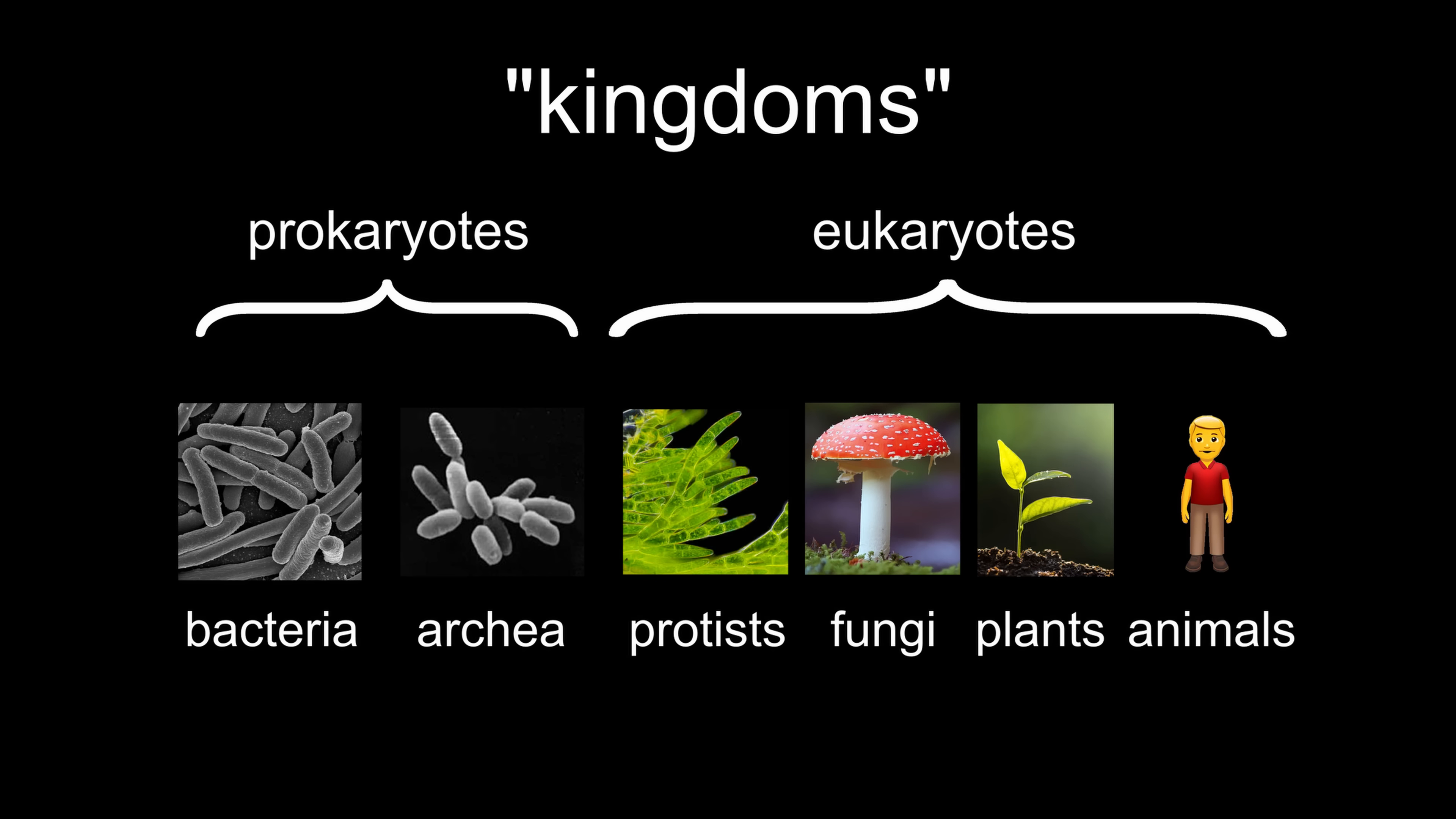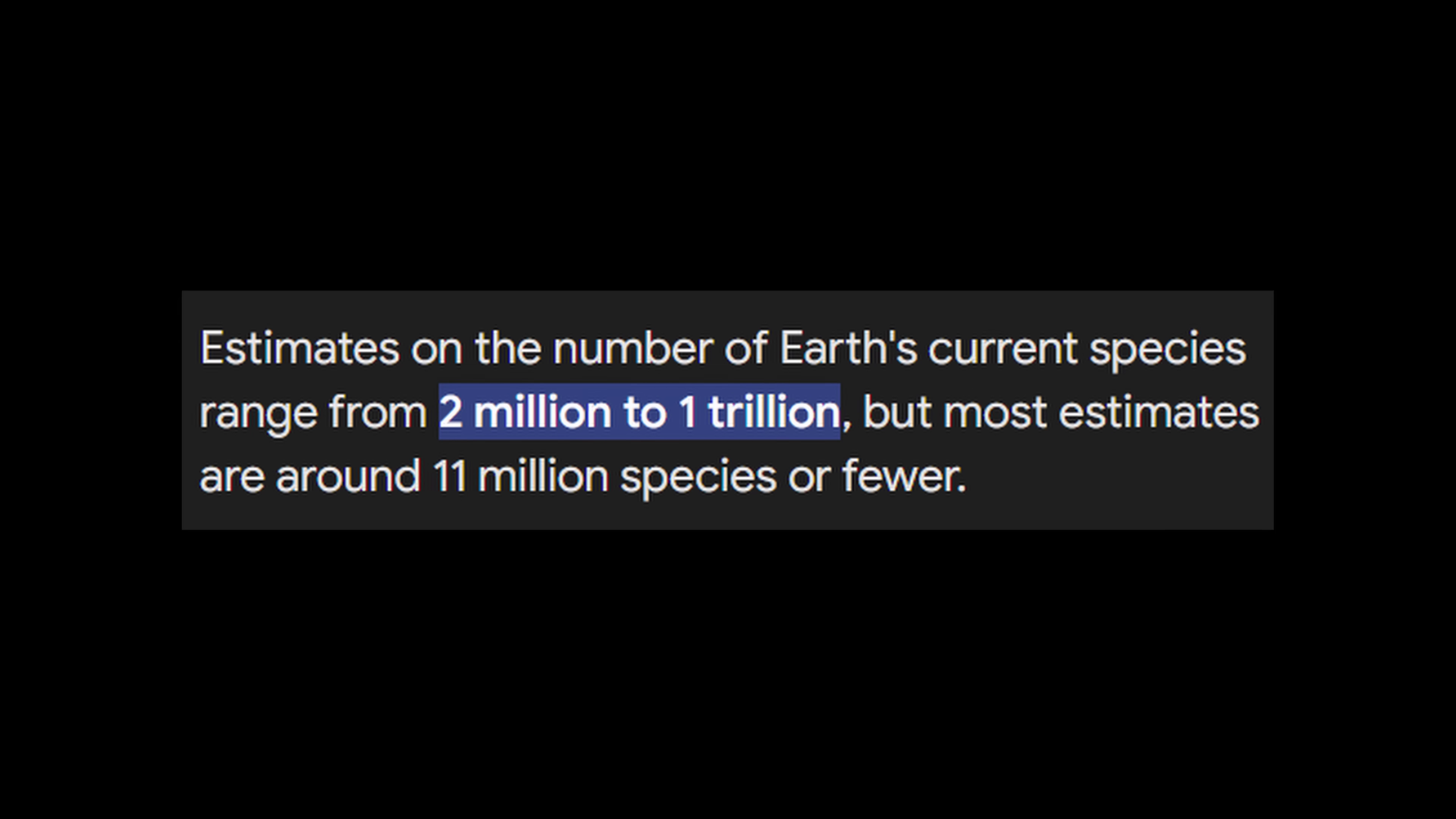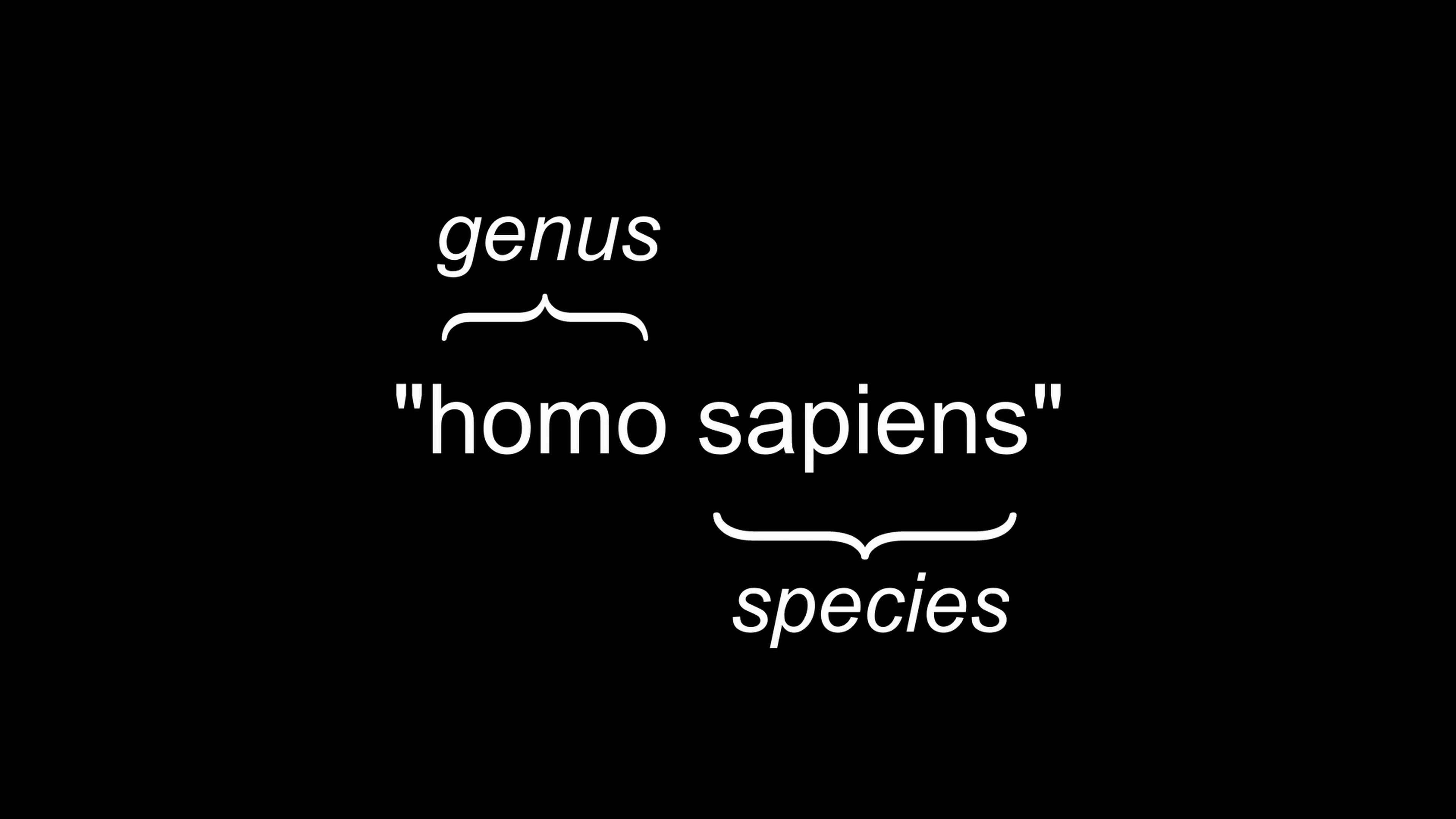These are what's known as kingdoms, which is a taxonomic rank, so basically how we classify different living things and how they're related to one another. Because there are quite a few species of life on this planet, and naming them cat, dangerous cat, and water cat wouldn't really be all that helpful, we also give every species a unique and unambiguous scientific name consisting of the genus and the species.